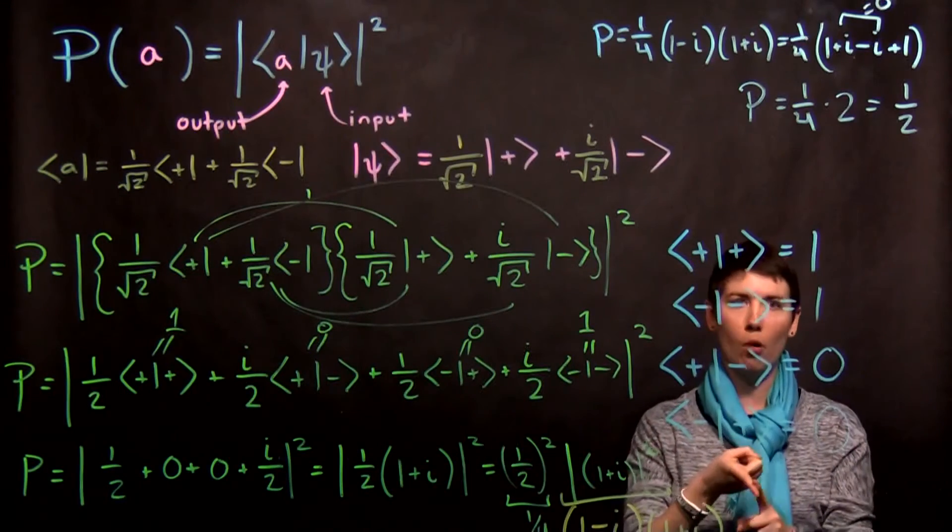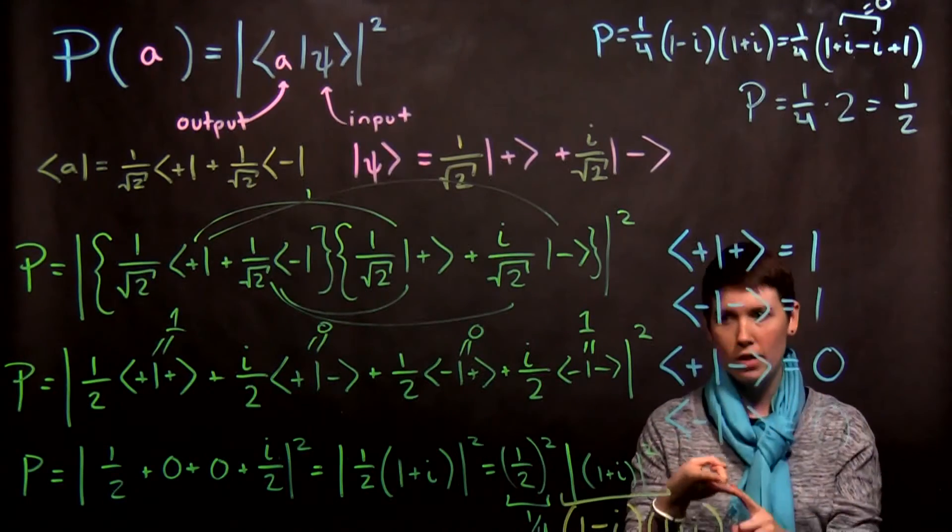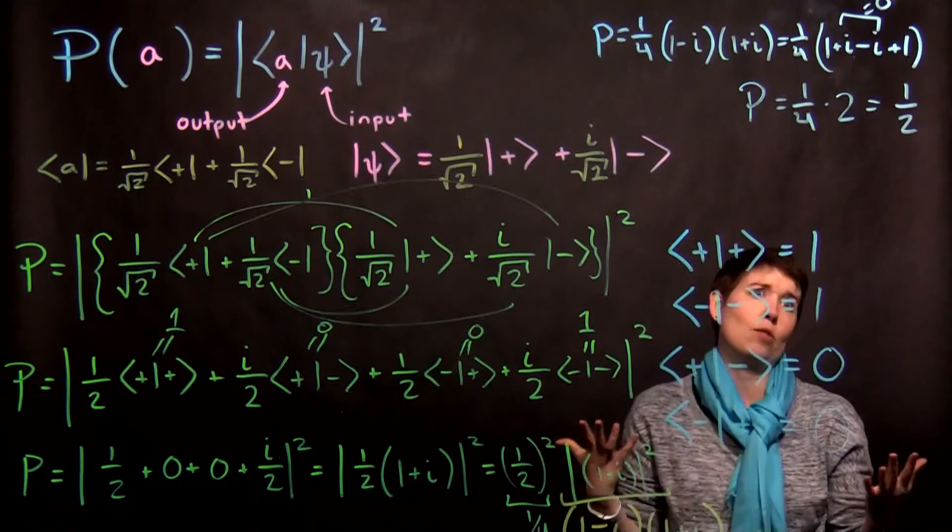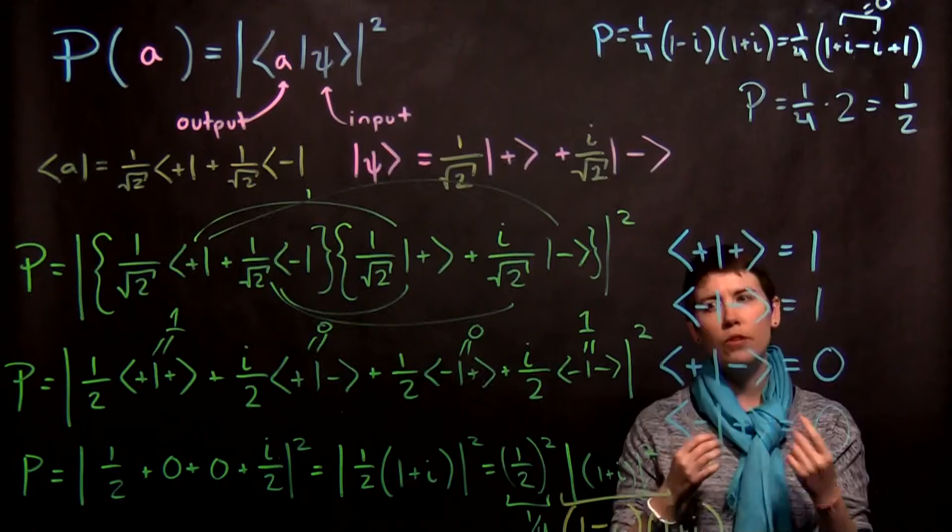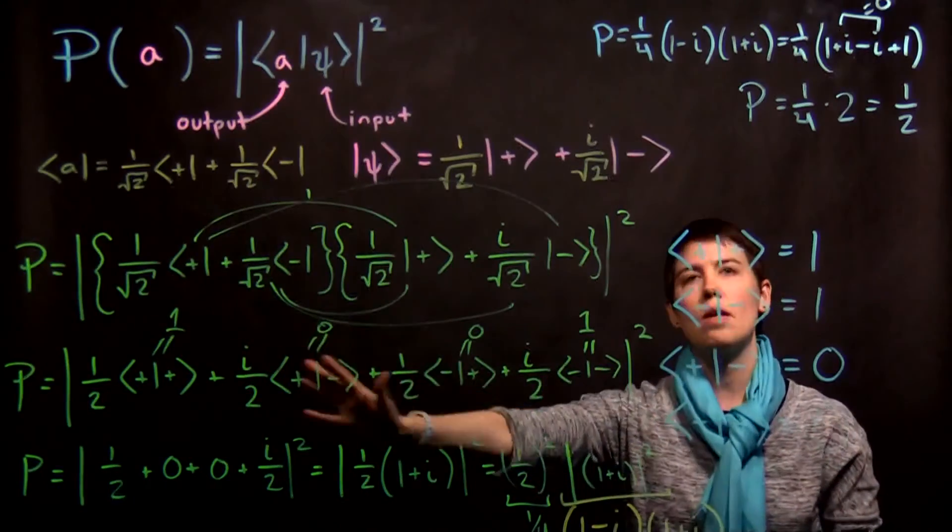If you get a negative number, you have a problem. If you have a number greater than one, you have a problem. If you have a complex number, or an imaginary number, you have a problem. So all of those things would indicate that you've made some mistake here.